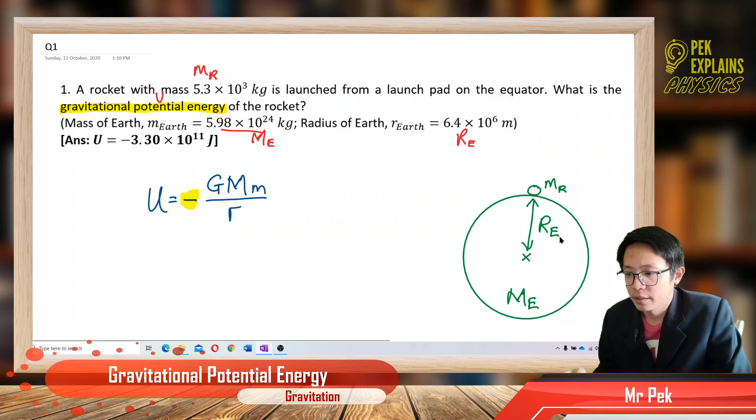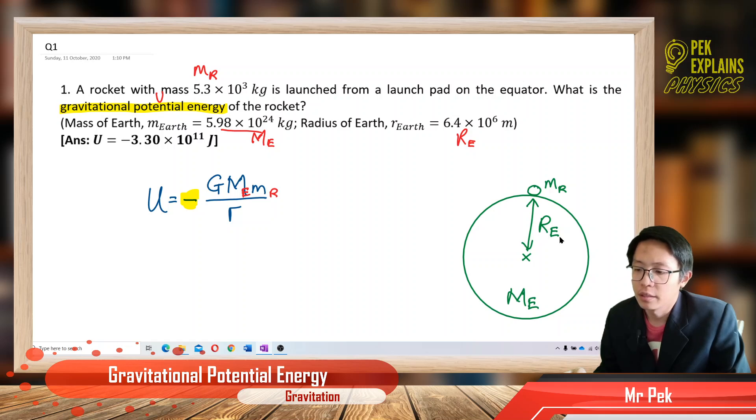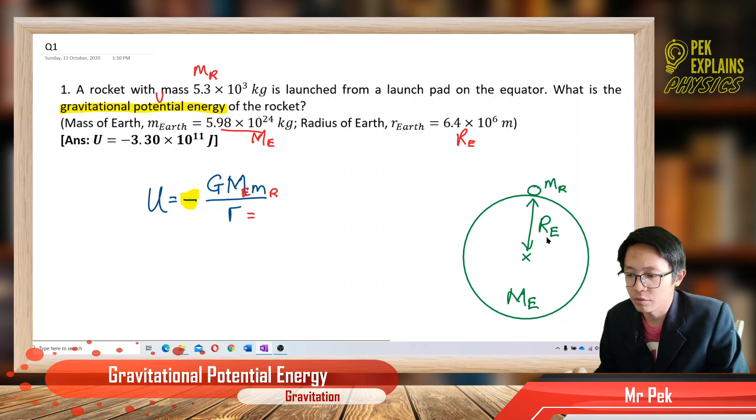So here, you need to use both masses. You need to use the mass of Earth and also mass of rocket. And R is the distance center to center. So from the rocket to the center of Earth, it is the radius of Earth. This should be the radius of Earth because it says it is on the surface of Earth.